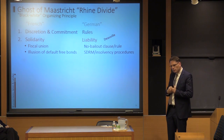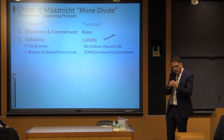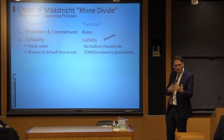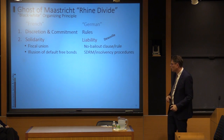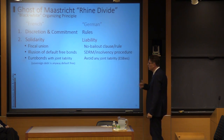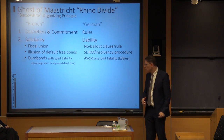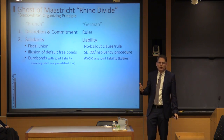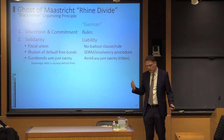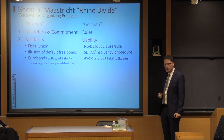The Germans say: if you move control to Brussels, then fine, we can also have some joint liability. But as long as government spending is controlled in national capitals, there won't be any joint liability. This fed into the euro bond discussion — should we have euro bonds with joint liabilities? Angela Merkel essentially said, not in my lifetime will there be euro bonds with joint liability.